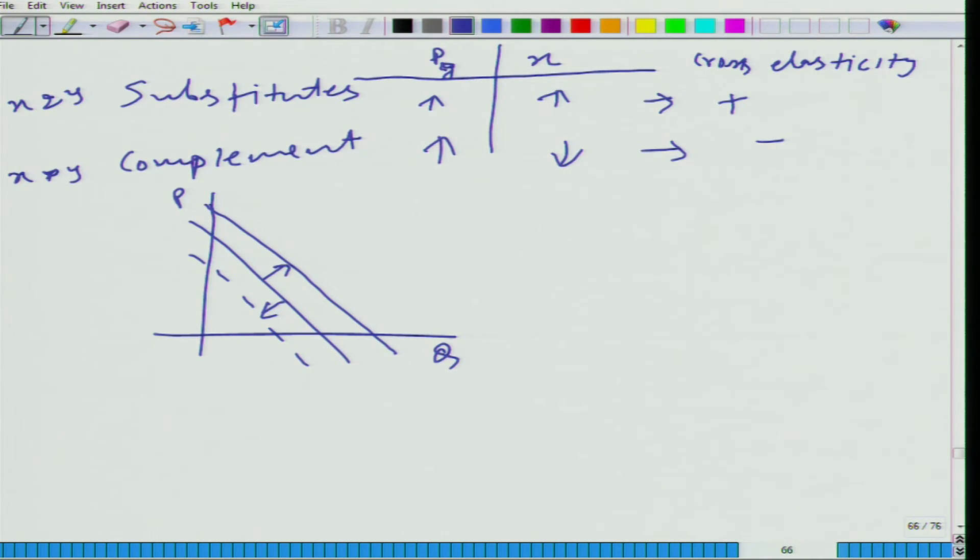Why there is shift in the demand function? Because we already know that if one of the variables which affect the demand function changes, its impact is a change in the or shift in the demand function. If that variable is other than its own price,